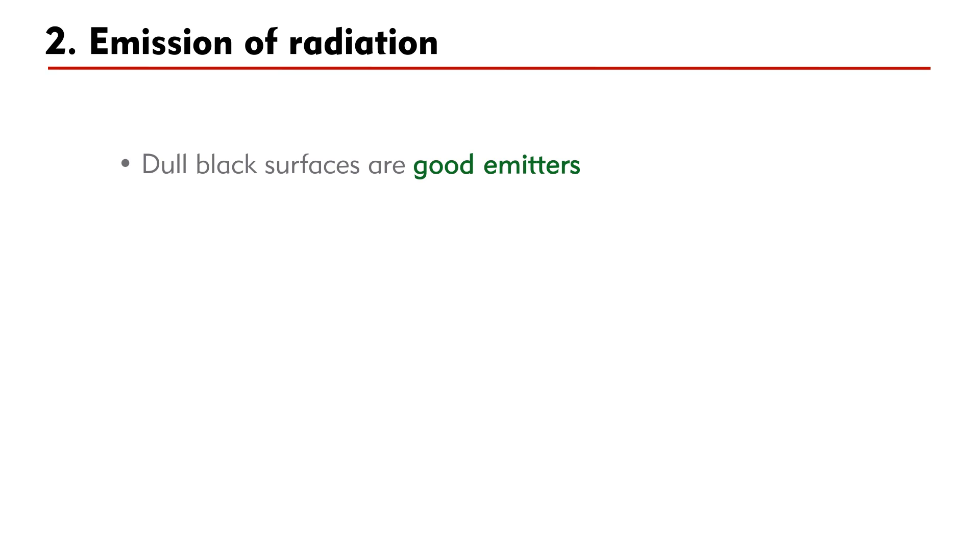This implies that dull black surfaces are good emitters of radiation. Since the temperature of the silver flask falls slowly, silvery surfaces are poor emitters of radiation.